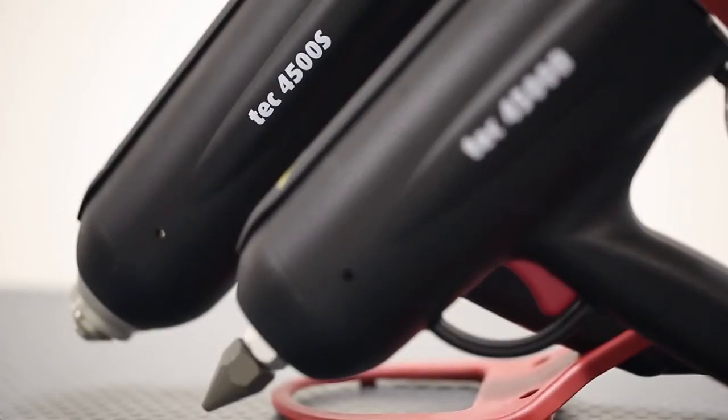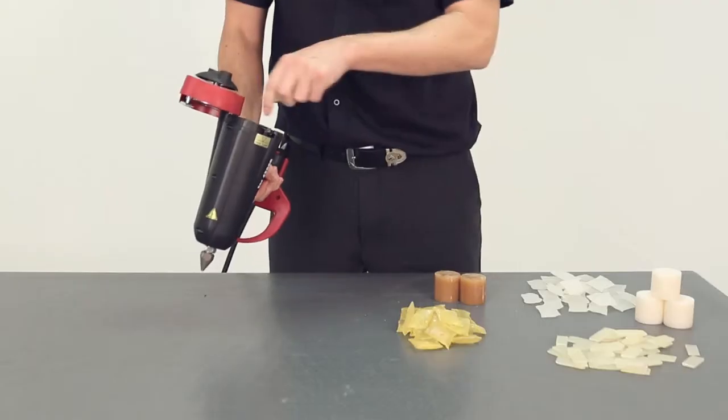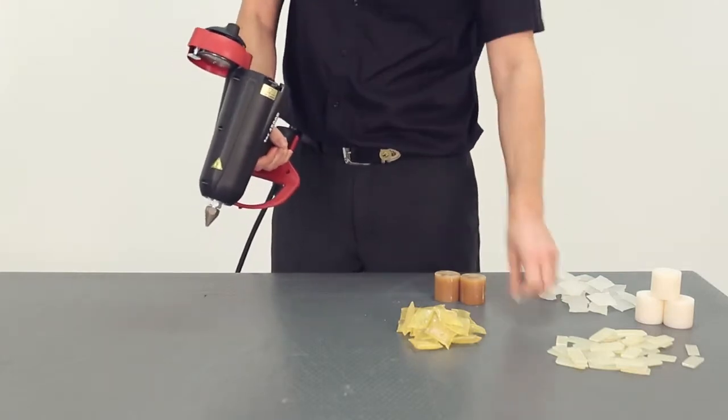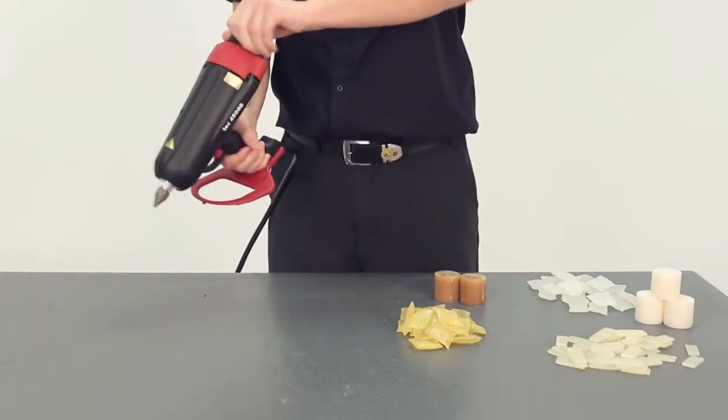Supplied as a bead or spray applicator, TEC 4500B and TEC 4500S, both models feature an innovative built-in melt chamber and pre-set temperature. This allows the gun to take EVA, polyolefins, or pressure-sensitive adhesives.